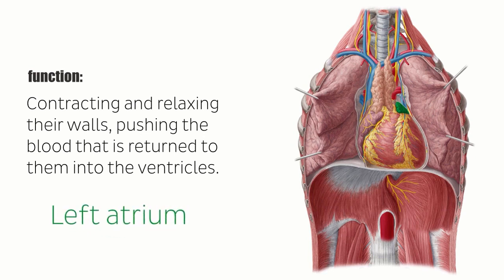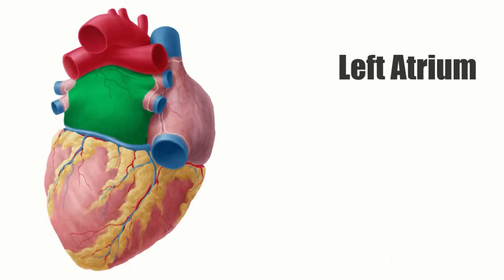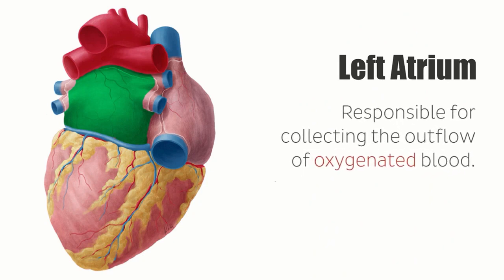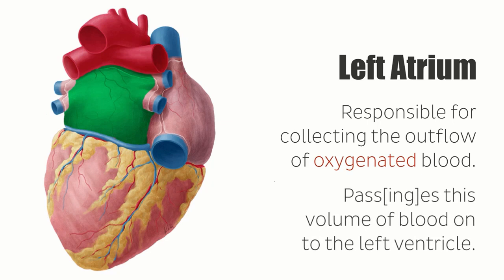In this tutorial, we will focus on the left atrium. The left atrium, as seen here highlighted in green on the diaphragmatic surface of the heart, is responsible for collecting the outflow of oxygenated blood that runs back to the heart from the pulmonary veins. It passes this volume of blood onto the left ventricle as the atrium contracts and the mitral valve opens.